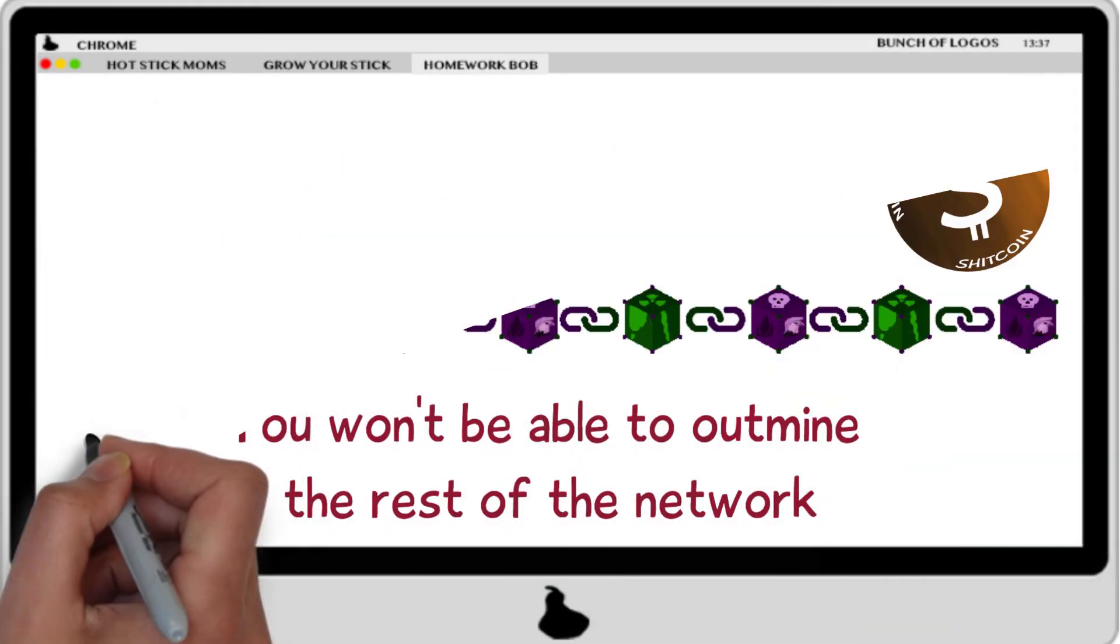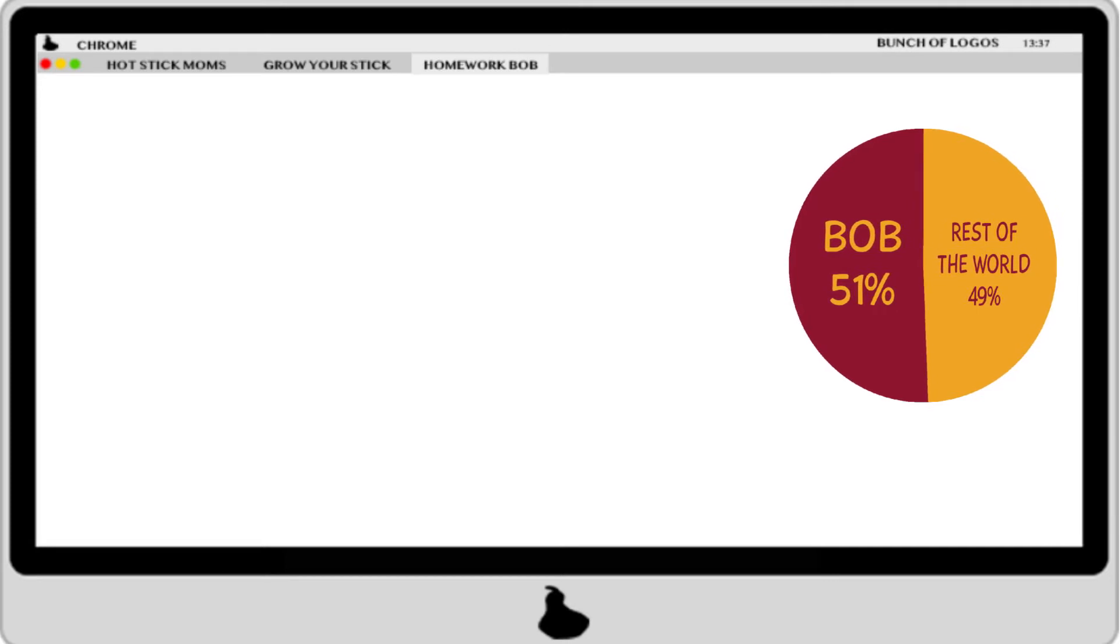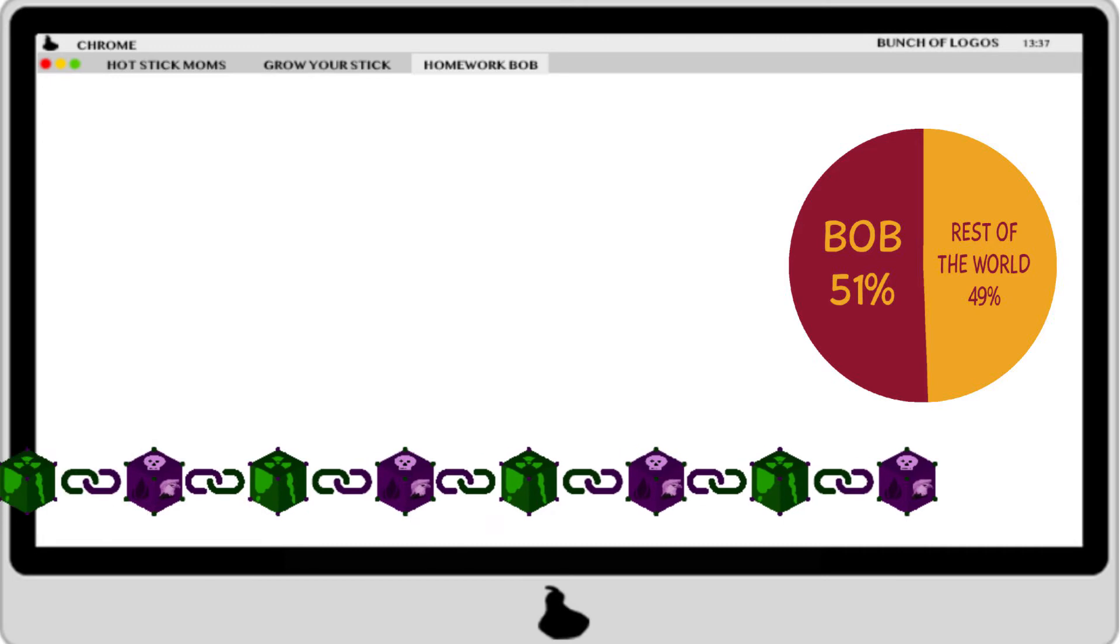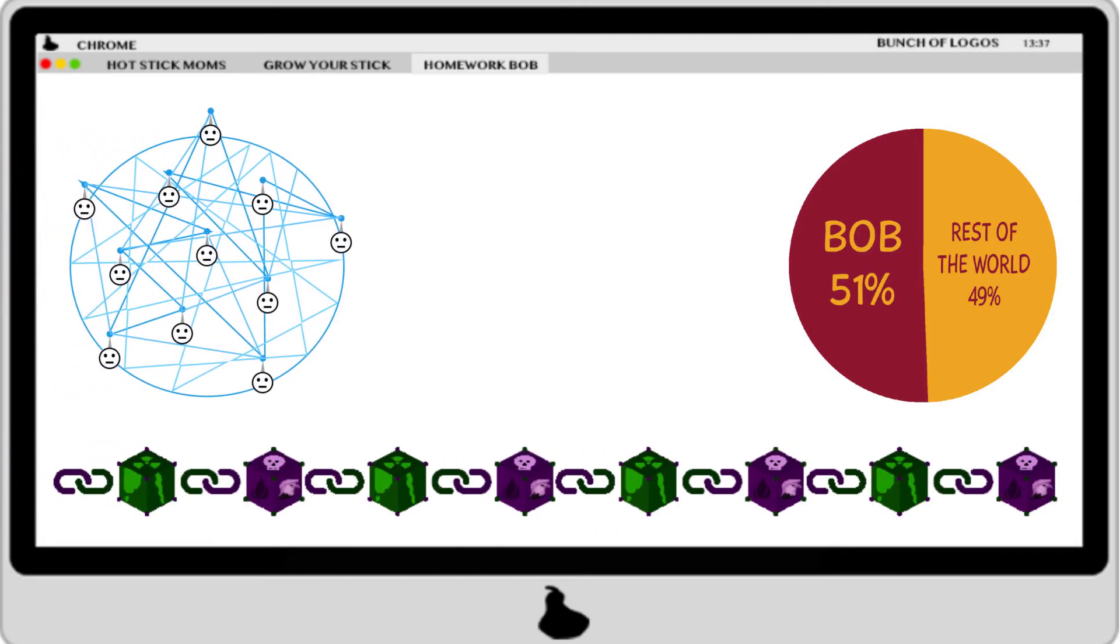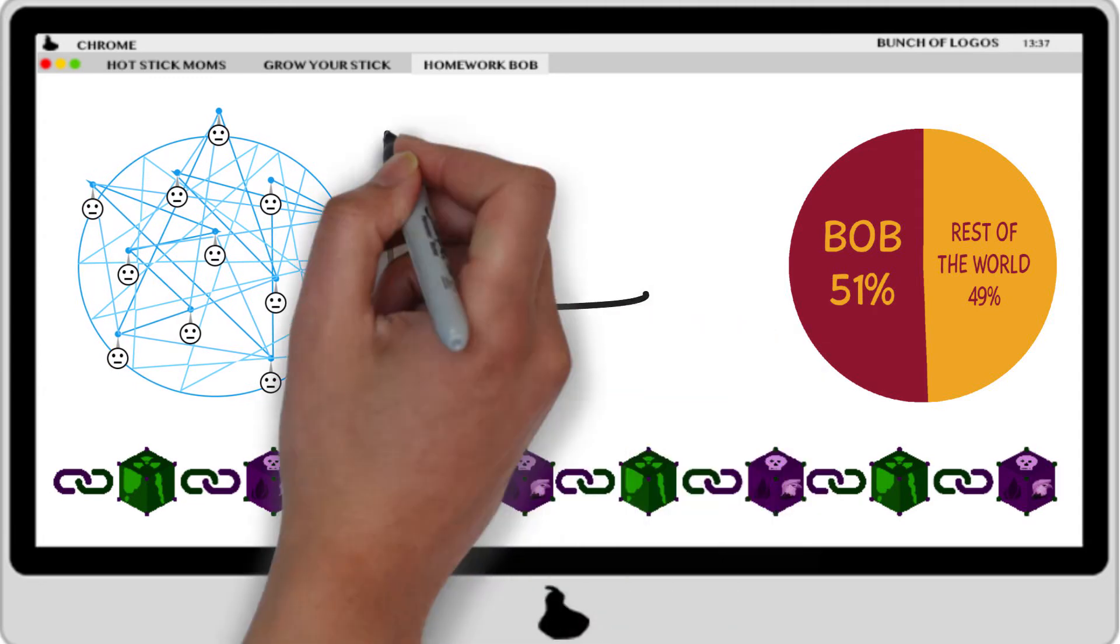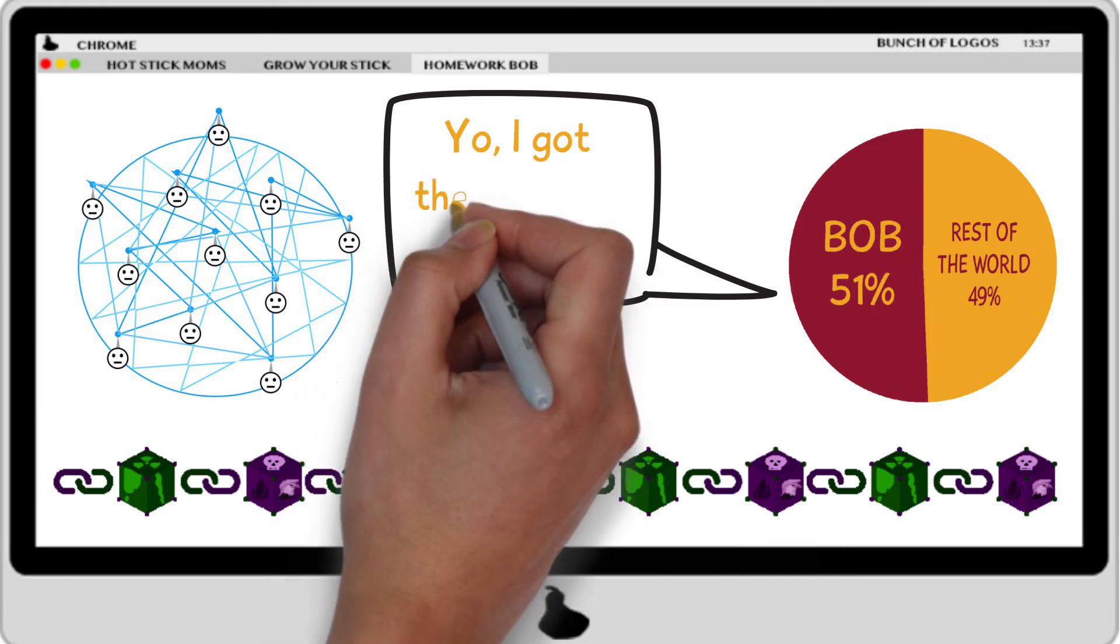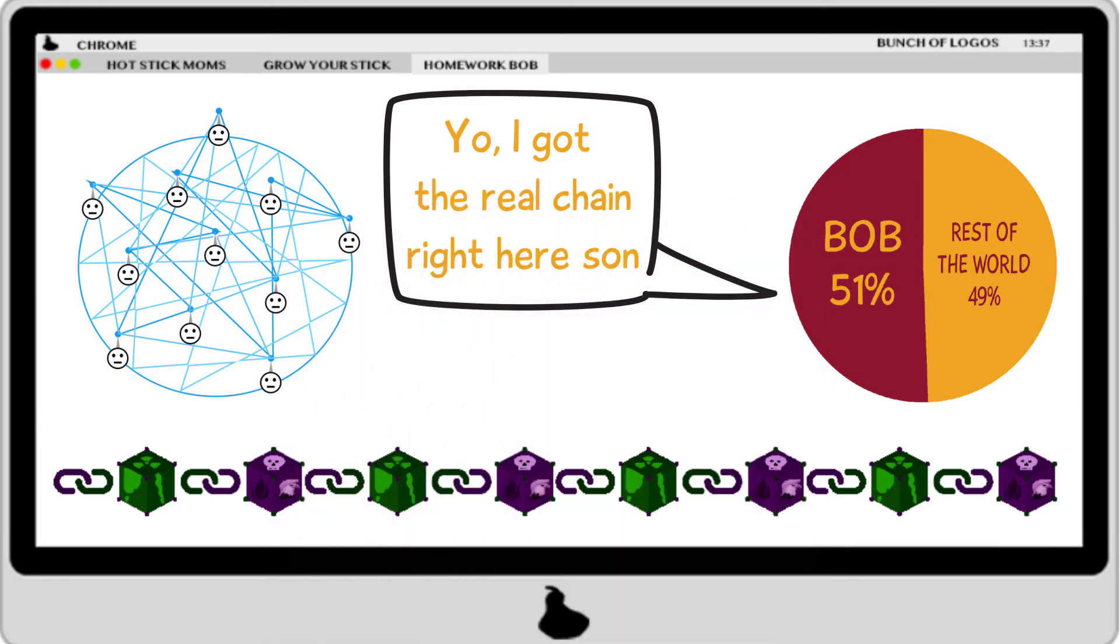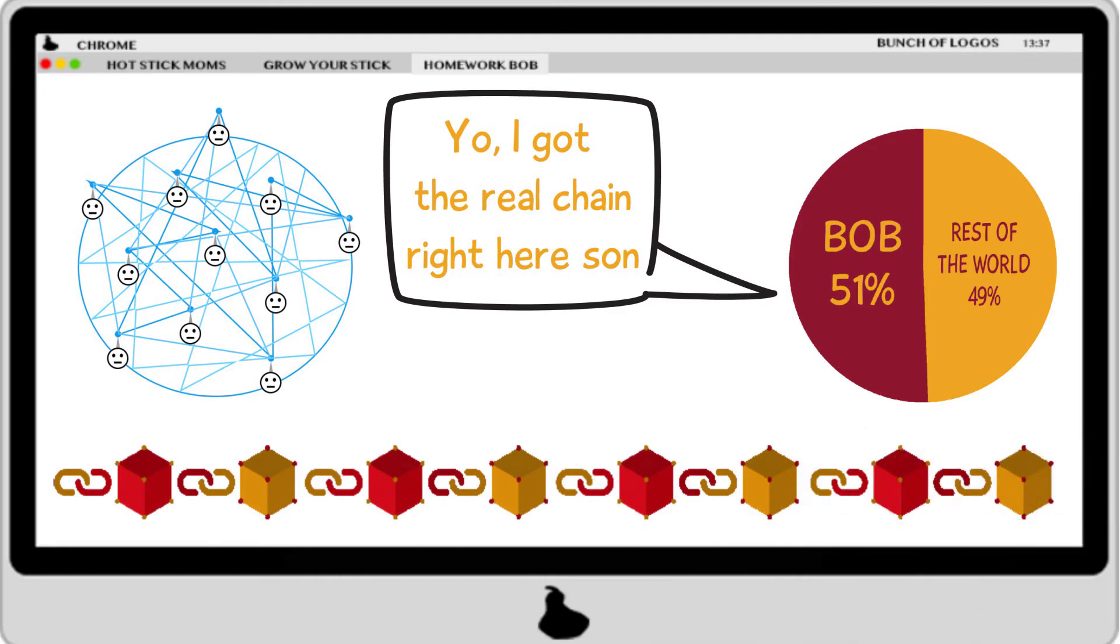But what if someone does manage to outmine the rest of the network? This could happen if somebody would manage to obtain 51% of the total computational power of the network. This person could proceed to mine a blockchain offline which would be built faster than the actual blockchain that is being built by the rest of the network. At any point in time they could present their chain to the network and since this chain has more work put into it than the other chain it will automatically be validated as the true chain. This scenario is called a 51% attack.